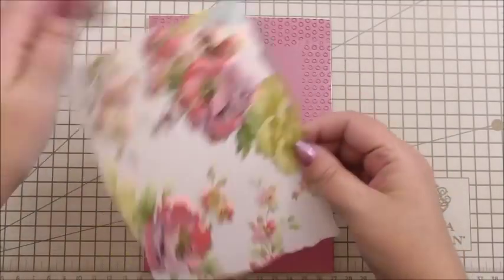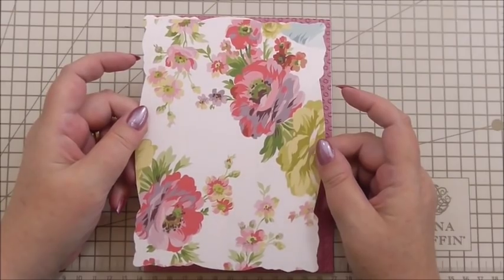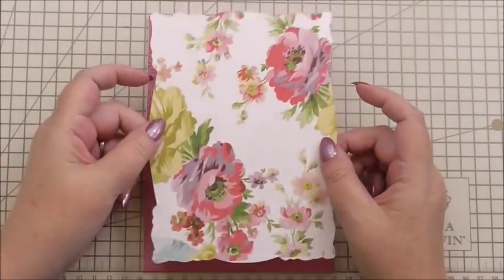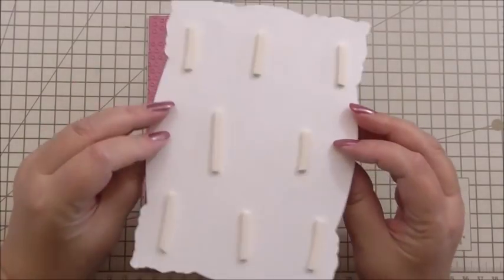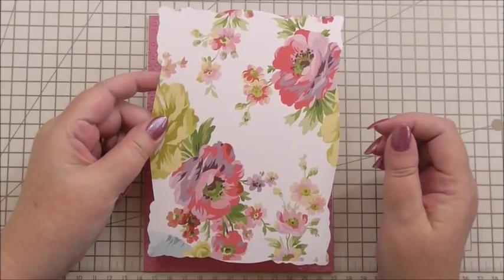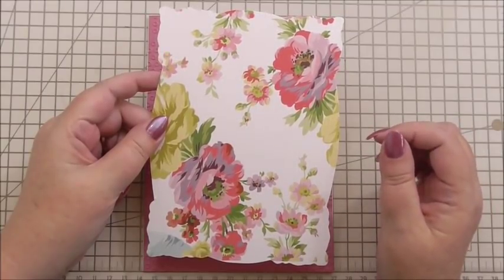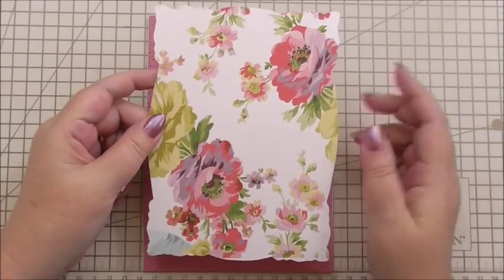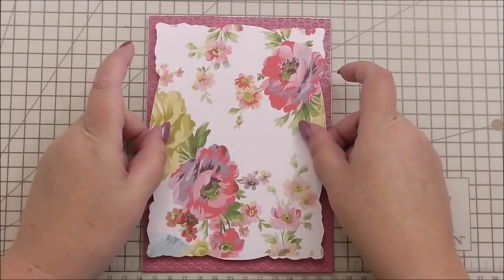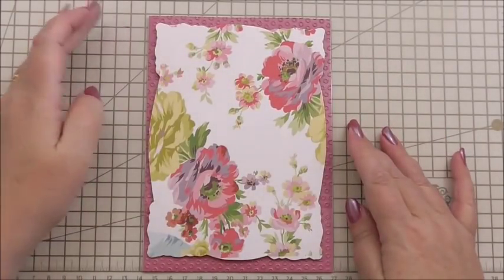My second layer is I've used the Rose Designer Collection from Anna. I just want to decide which way up to use that. We'll go that way. I've cut out a shadow effect from the French frame dies. To get this, I've drawn round the die because I wanted a shadow layer. I've put it on 3D foam, and I'm just pressing it down on the front of the card.